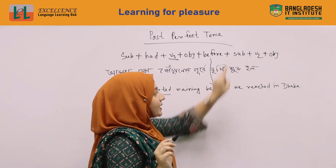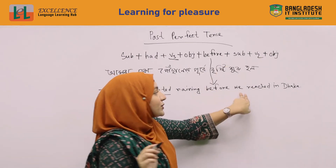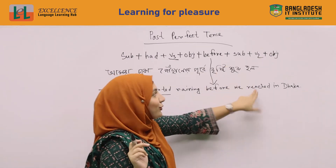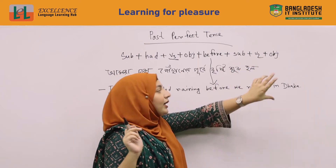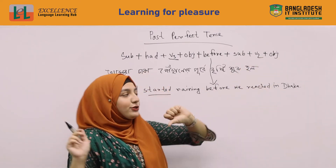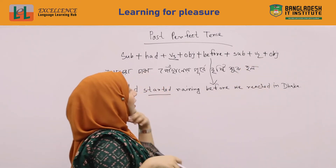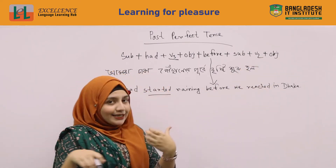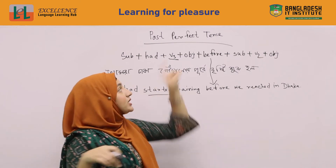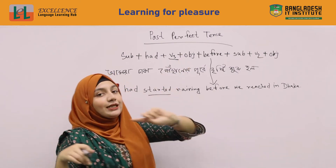'We' is subject, 'reached' is verb second form, and lastly we are using the object. When we go to the next step, we will follow the first perfect tense structure.